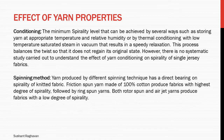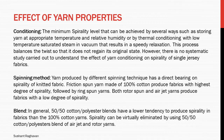Yarn produced by different spinning techniques has a direct bearing on spirality of knitted fabric. Friction spun yarn made of 100% cotton produces fabric with the highest degree of spirality, followed by ring spun yarns. Both rotor spun and air jet yarns produce fabrics with a low degree of spirality. In general, 50/50 cotton-polyester blends have a lower tendency to produce spirality than 100% cotton yarns, and spirality can be virtually eliminated by using 50/50 cotton-polyester blends of air jet and rotor yarns.